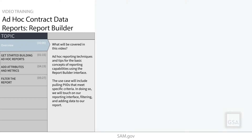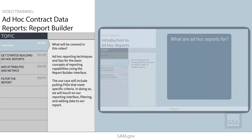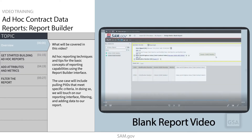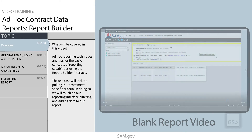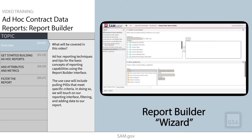Welcome to our tutorial video on the Report Builder in SAM.gov's Ad Hoc Contract Data Reports. If you are not sure whether you need Ad Hoc Reports, please see our introductory video on Ad Hoc Reports. If you have already watched our video on building a basic Ad Hoc Report, this video shows you how to build that same report in the Report Builder, which is a wizard-like interface where you answer prompts to build your reports instead of starting from scratch. But don't worry if you have not watched the other video yet — you can begin here.